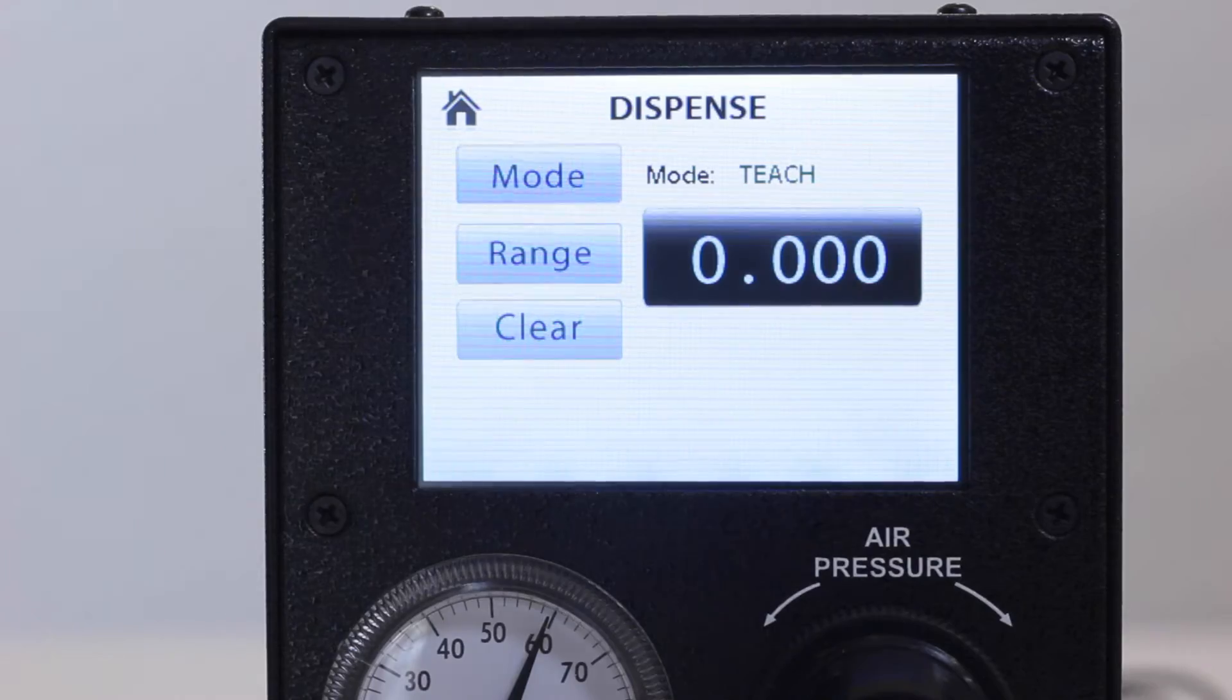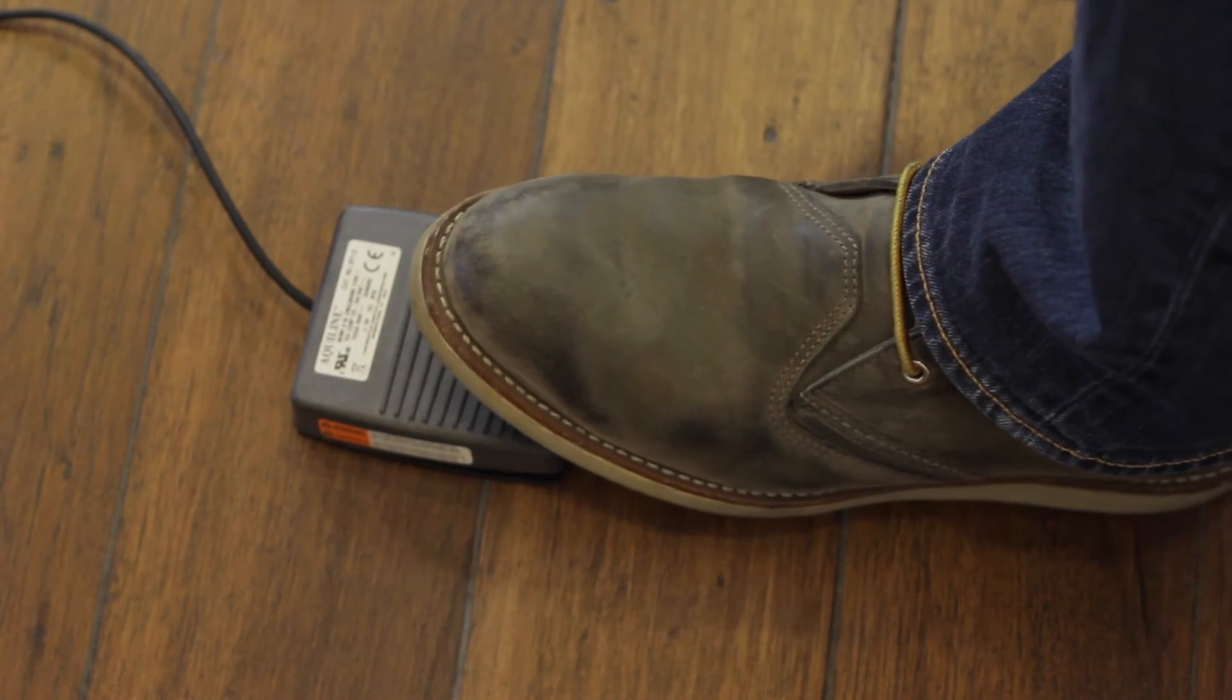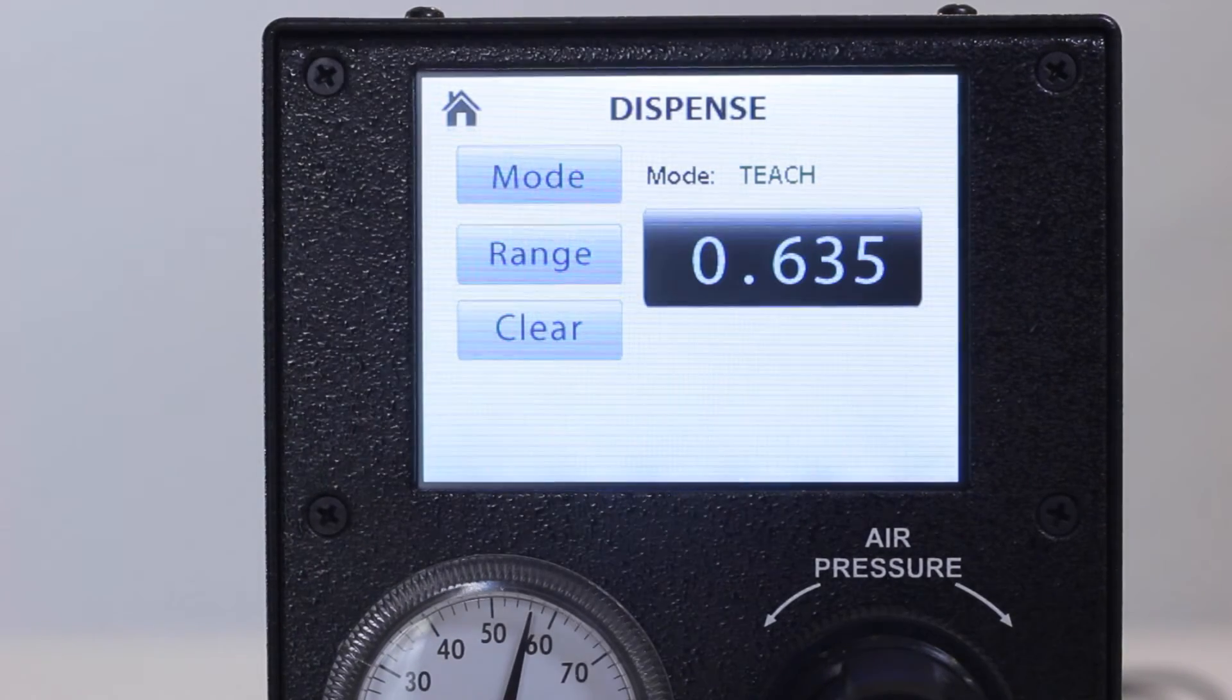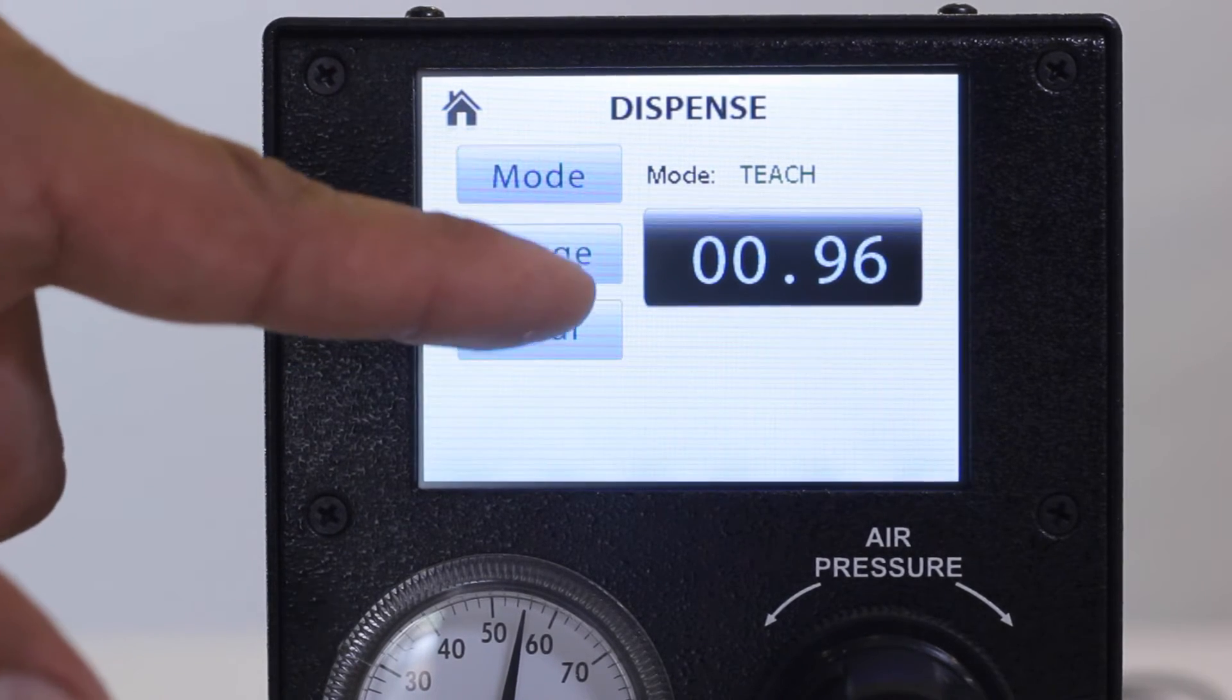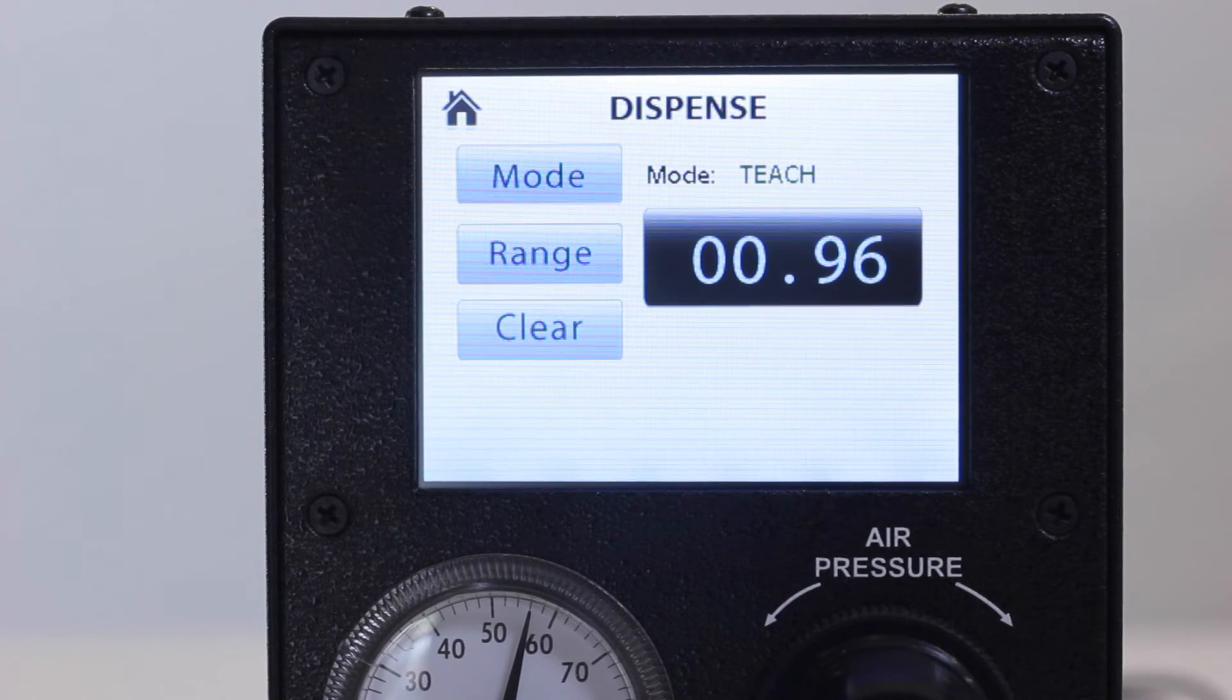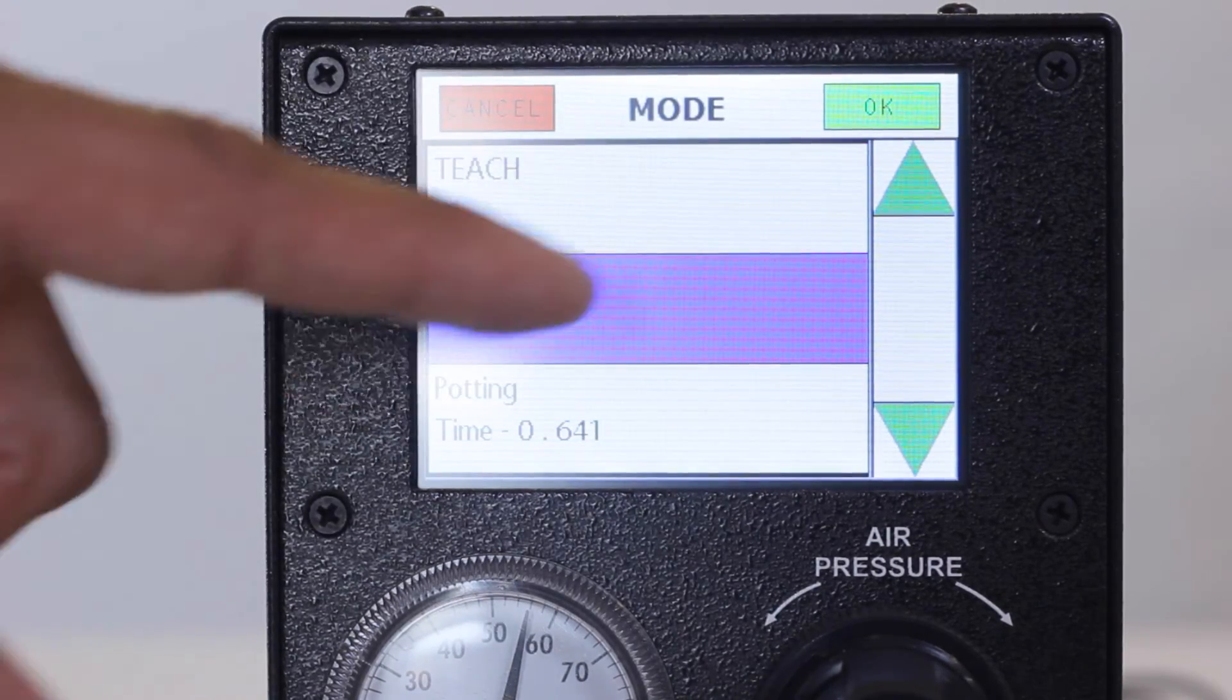In Teach mode, you are able to use the parameters set in Manual mode but with the added feature of a timer that is activated when the foot pedal is actuated. You can experiment to determine the proper timing to dispense material based upon viscosity, pressure, flow and tip selection. The decimal place can be moved by pressing the Range button to increase or decrease your timing range. Press the Mode button again to go back to the dispensing mode options.